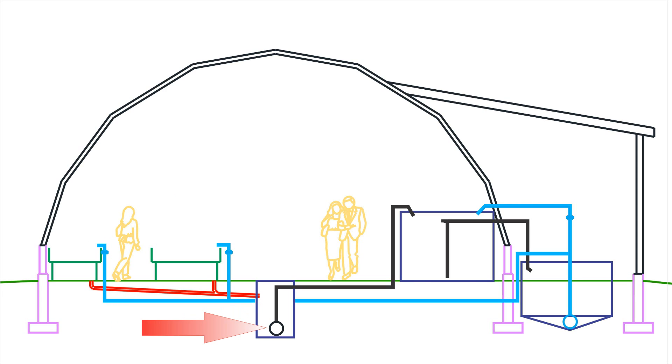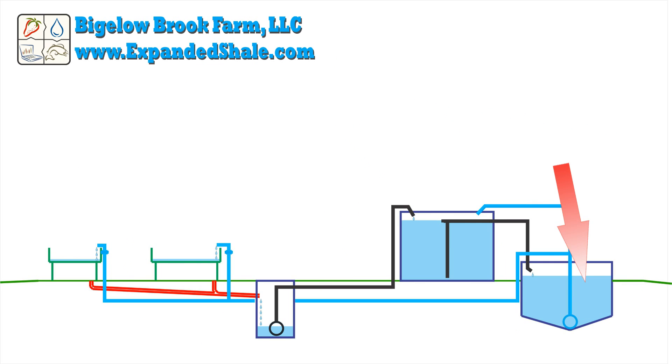There is a float switch in the sump tank that pumps the water out of the sump and back into the main fish tank. The large buffer sump tank is used to maintain a consistent water level in the fish tank. Since the levels in the grow beds and central sump tank are constantly changing, that difference in volume has to be offset elsewhere.